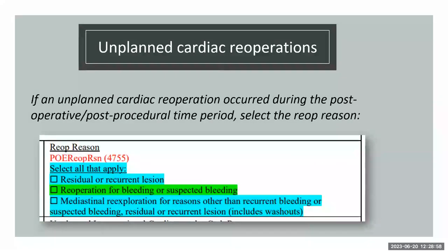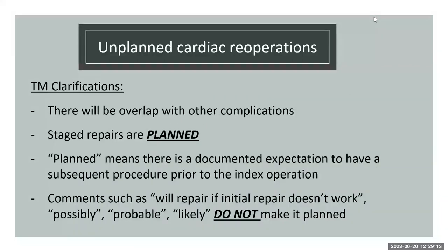For unplanned cardiac re-operations, select code 22 and then choose from the child fields (select all that apply). Clarification: stage repairs are considered planned—but 'planned' means there is a documented expectation to have a subsequent procedure prior to the index operation. Comments such as 'will repair if initial repair doesn't work,' 'possibly,' 'probably,' 'may undergo,' or 'likely to undergo' do not qualify as making the operation planned.